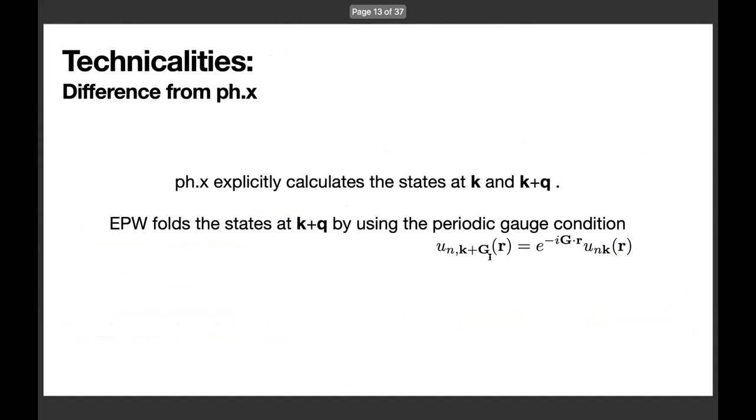A phonon code can also calculate electron phonon vertex on coarse grid, but there are some differences. For example, phonon code explicitly calculates states at k and k plus q for each q point. But EPW just needs one full grid non-self consistent calculation for the evaluation of electron phonon vertex, since EPW folds the states at k and k plus q back into the first Brillouin zone. This also indicates EPW employs the periodic gauge condition same as in Wannier90.